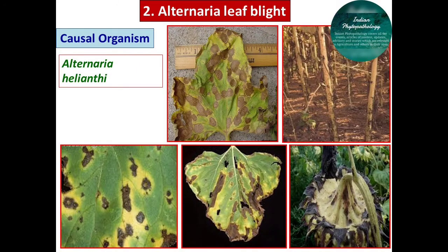Regarding the disease cycle of Alternaria blight, the primary source of infection is infected mycelium, infected host tissues, or weed hosts. This fungus is also seed-borne. The secondary source of infection is wind-borne conidia, which may travel from infected portions to healthy portions through air currents. Favorable conditions include rainy weather, cool winter climate, and late-sown crops, which are most favorable for attack by Alternaria blight.